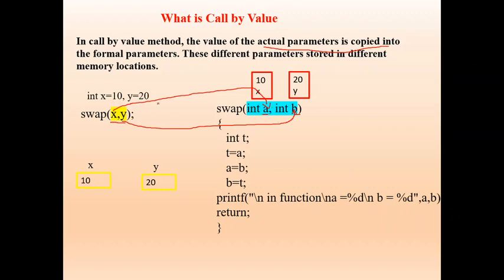In this example, x is 10 and y is 20. So a is replaced by x, and since x value is 10, whenever I refer to a inside the swap function, it means 10. In the same way, b is replaced by y, and y value is 20, so b means 20. Now, t is a temporary variable. The value of a is given to t, then the value of b is given to a, and the value of t is given to b — just swapping, exchanging the values. After changing, a value becomes 20 and b value becomes 10.